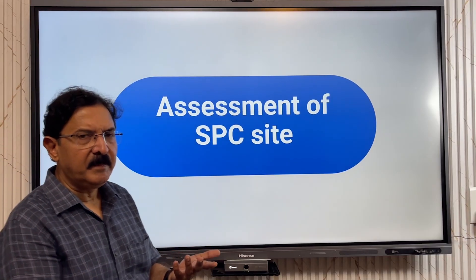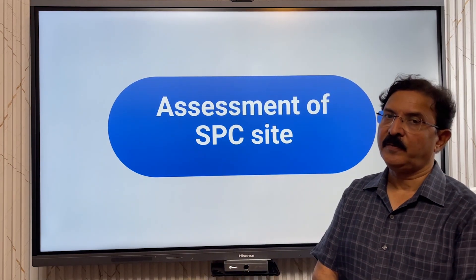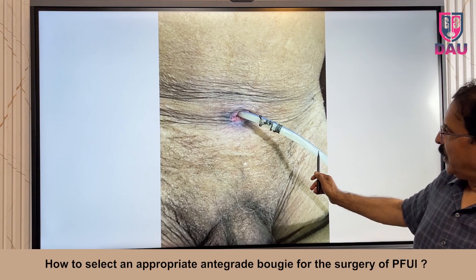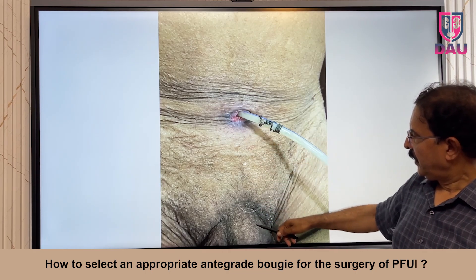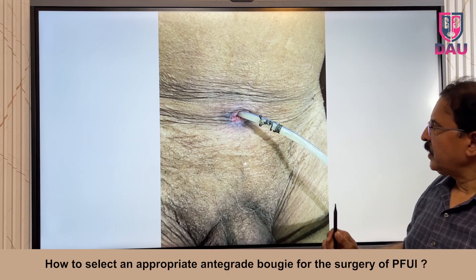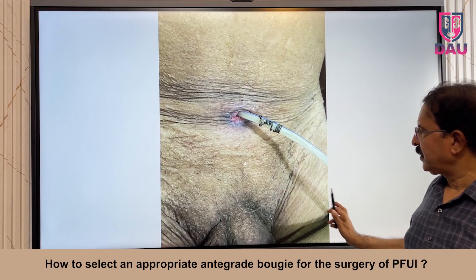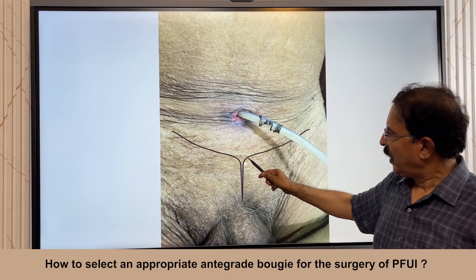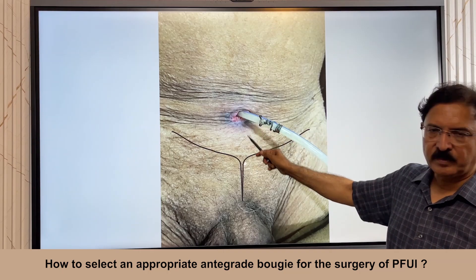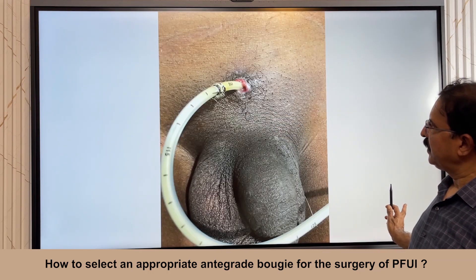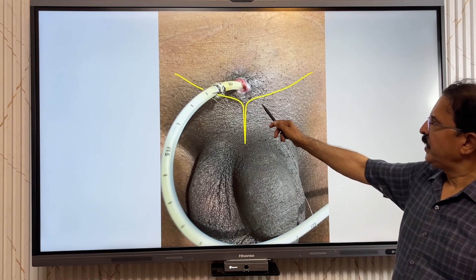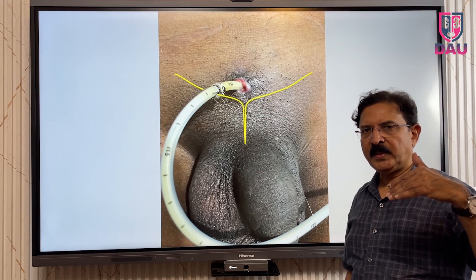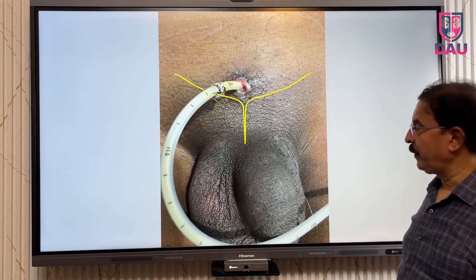What I mean by assessing the site of the suprapubic catheter — this is the suprapubic catheter. What you need to know is this entry point and its relationship with the pubic bone: how high it is from the pubic bone. In this patient, the bone is here and the catheter is very close to the upper border of the pubis, so it is a low suprapubic catheter.